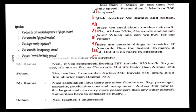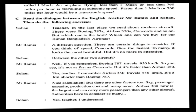Okay, dear students, I think all of you are clear. There is a note. The speed of sound, which is approximately 760 miles per hour, is called one Mach. An airplane flying less than one Mach, or less than 760 miles per hour, is traveling at subsonic speed. Faster than one Mach, or 760 miles per hour, would be supersonic speed. So, now we know what supersonic speed is.